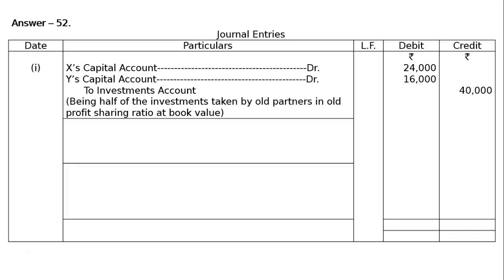First journal entry: X's capital account debited and Y's capital account debited to investment account for half, Rs 40,000. This Rs 40,000 in the credit column will be distributed among X and Y as they are taking investments over in their profit sharing ratio at cost price, that is 3 is to 2. Hence, 40,000 debited to X's capital account Rs 24,000 and to Y's capital account Rs 16,000. Being half of the investments taken by old partners in old profit sharing ratio, at cost value.